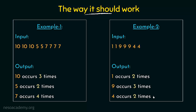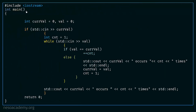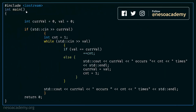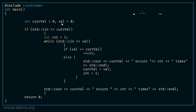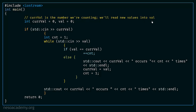Let's see how we can write this program using the things we have studied so far. We have the header and the main function. Inside the main function, I am declaring two integer variables: curveval, which denotes the current value and is set to zero, and val, which will hold new values. Curveval is the number we are currently counting, and we will read new values into val.